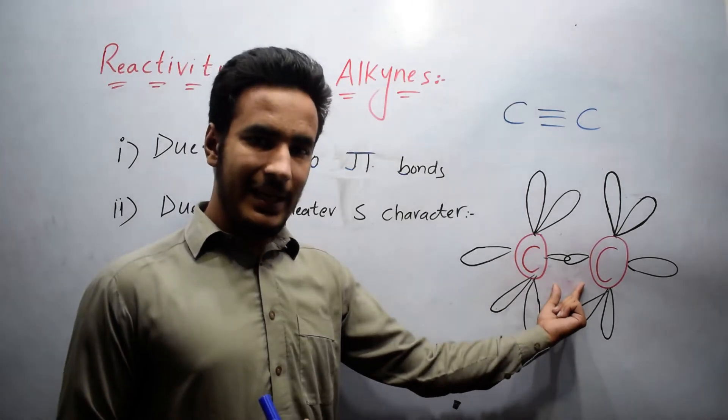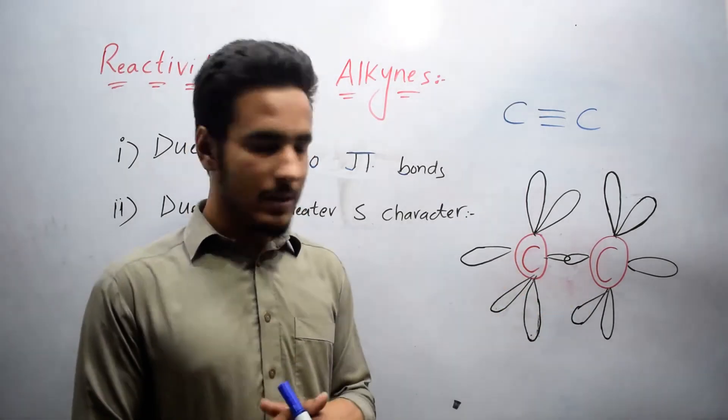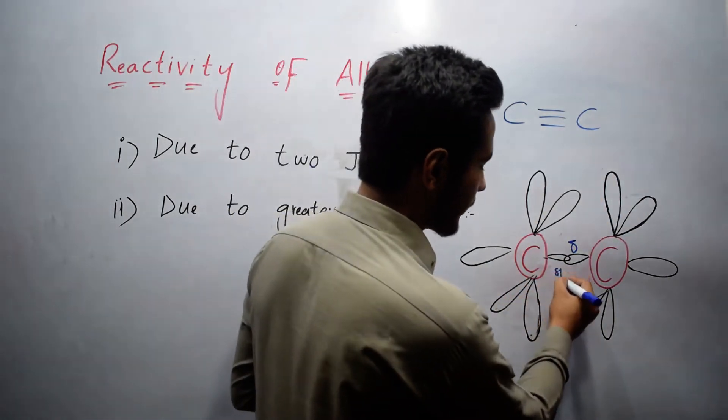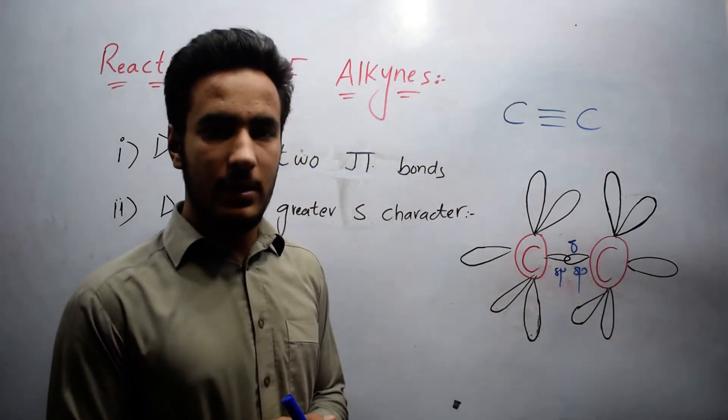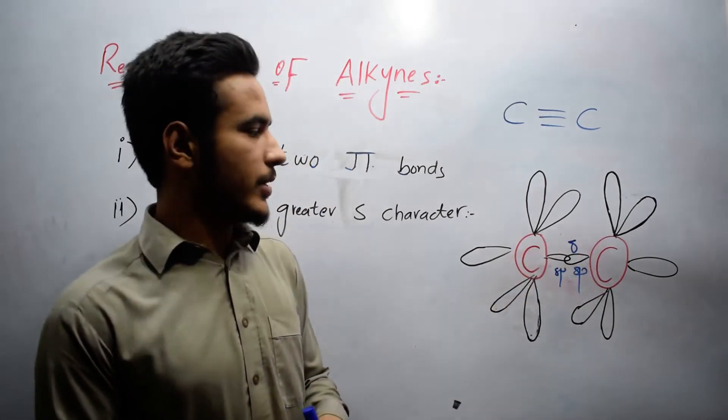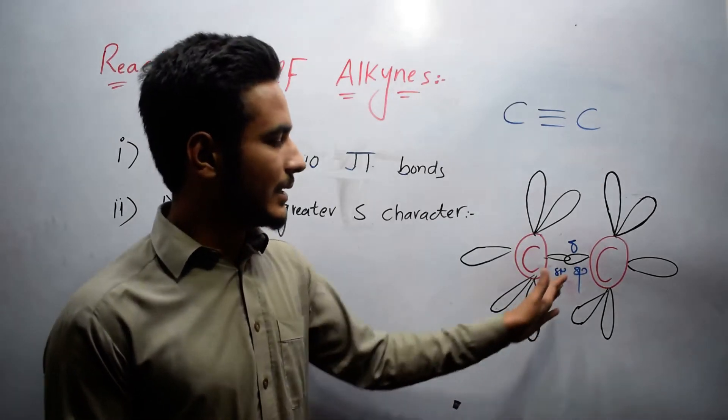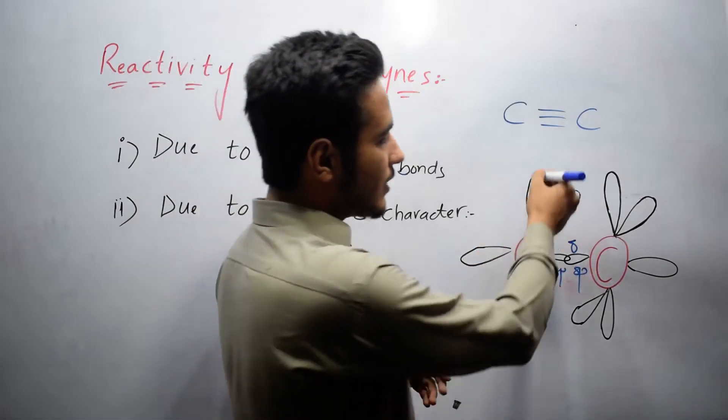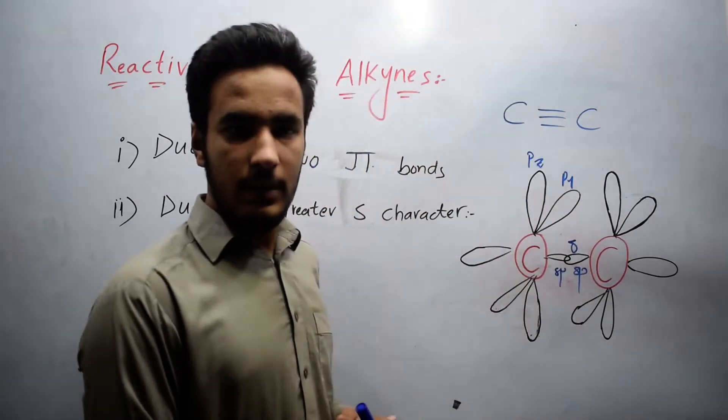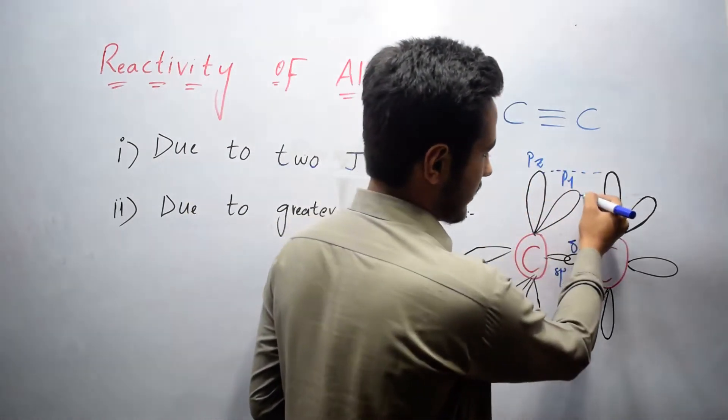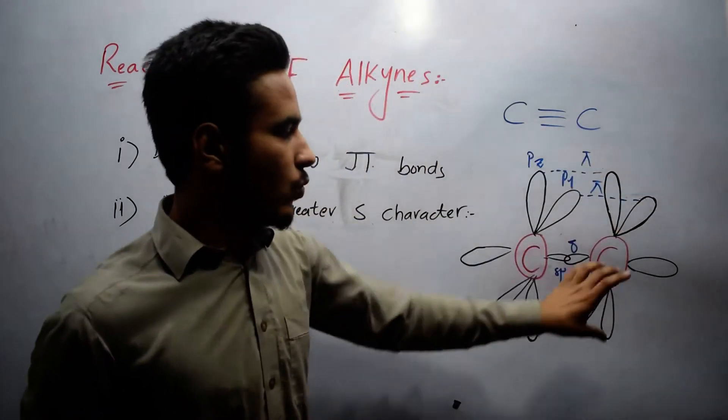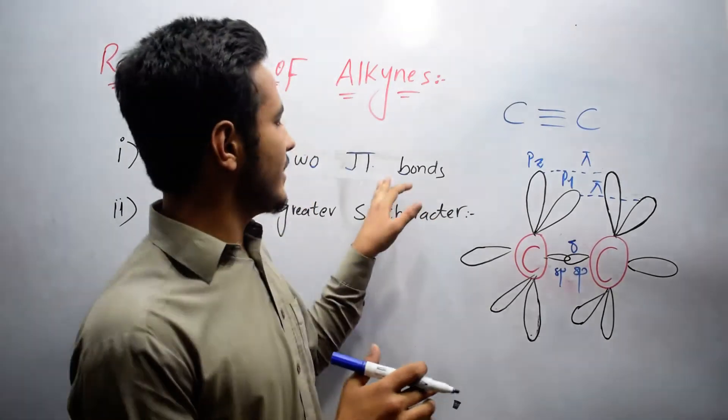This is the structure of ethyne, which is the first member of alkynes. Here we have one sigma bond which is formed between sp and sp atomic orbitals. If you want to know about hybridization and the structure of ethyne, this link is in the description. In this we have pz atomic orbital and py. Sidewise overlapping forms pi bond. So we have two pi bonds and one sigma bond. This was in case of alkyne.